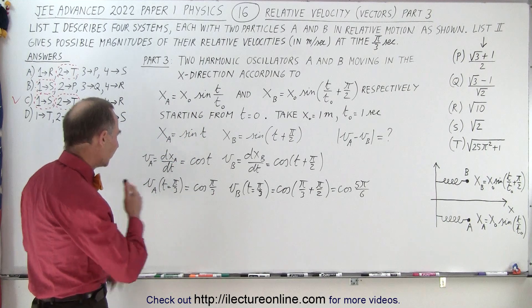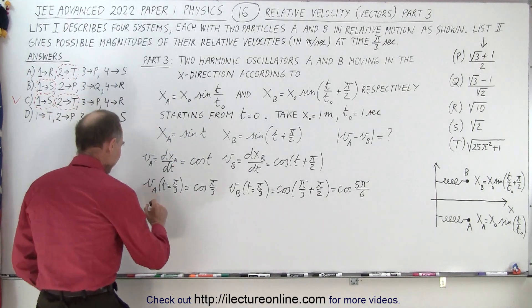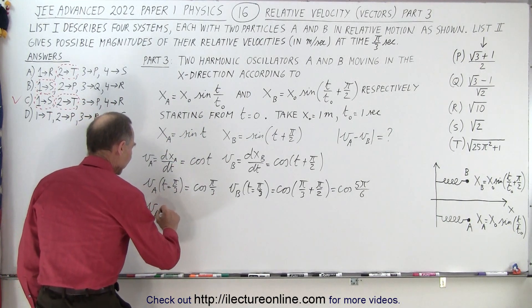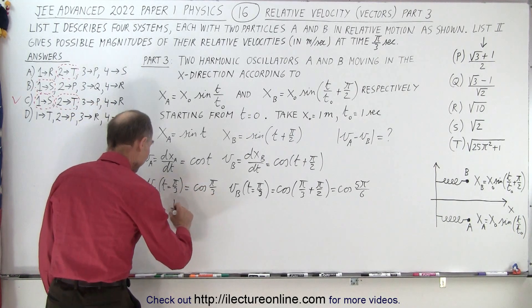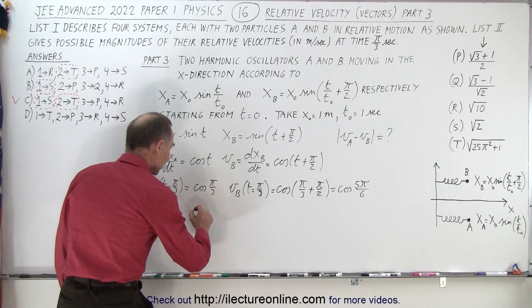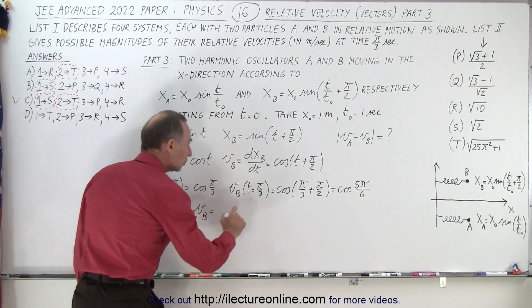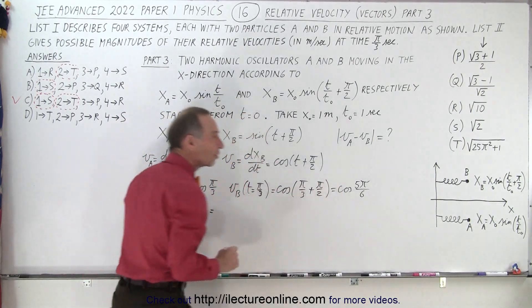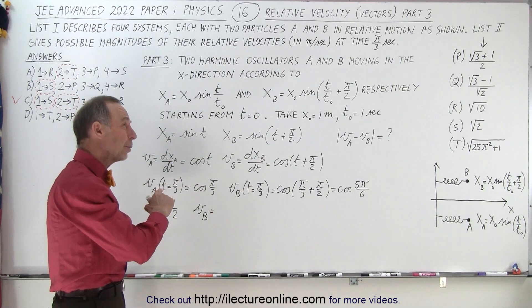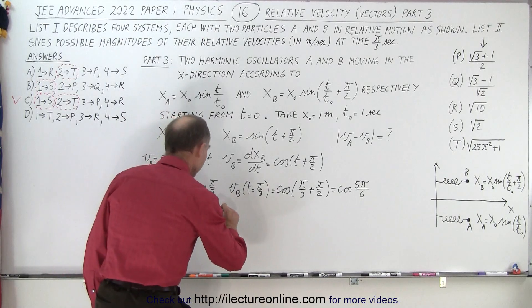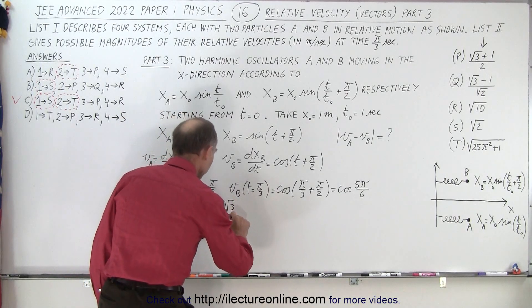All right, now let's evaluate these two. So v of a is equal to the cosine of pi over three. Now that's 60 degrees, the cosine of 60 is one-half. And v of b is equal to the cosine of five pi over six. Five pi over six, that would be 150 degrees. That would be minus the square root of three over two.